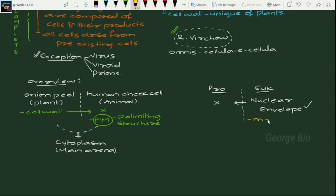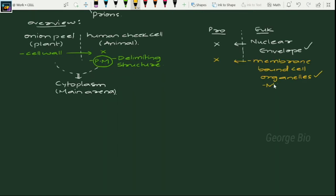Membrane-bound cell organelles are present in eukaryotes and absent in prokaryotes. We are not saying that cell organelles are absent — specifically membrane-bound cell organelles are absent. These include mitochondria, microbodies, lysosomes, plastids, and vacuoles. All these are absent in prokaryotes.